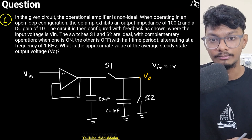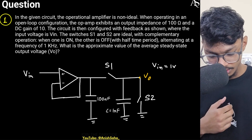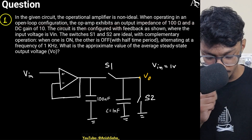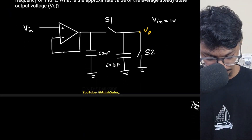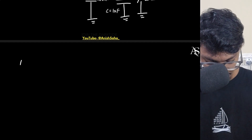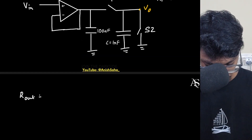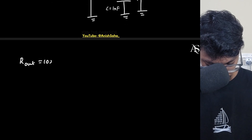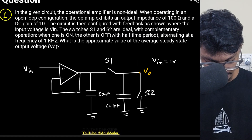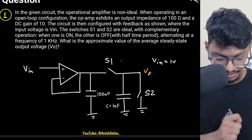If input impedance is not mentioned, assume it is infinite. When operating in open-loop configuration, the op-amp exhibits an output impedance of 100 ohms and a DC gain of 10. Open loop means there is no feedback, so Rout is 100 ohms and the differential DC gain is 10. The circuit is then configured with feedback as shown.